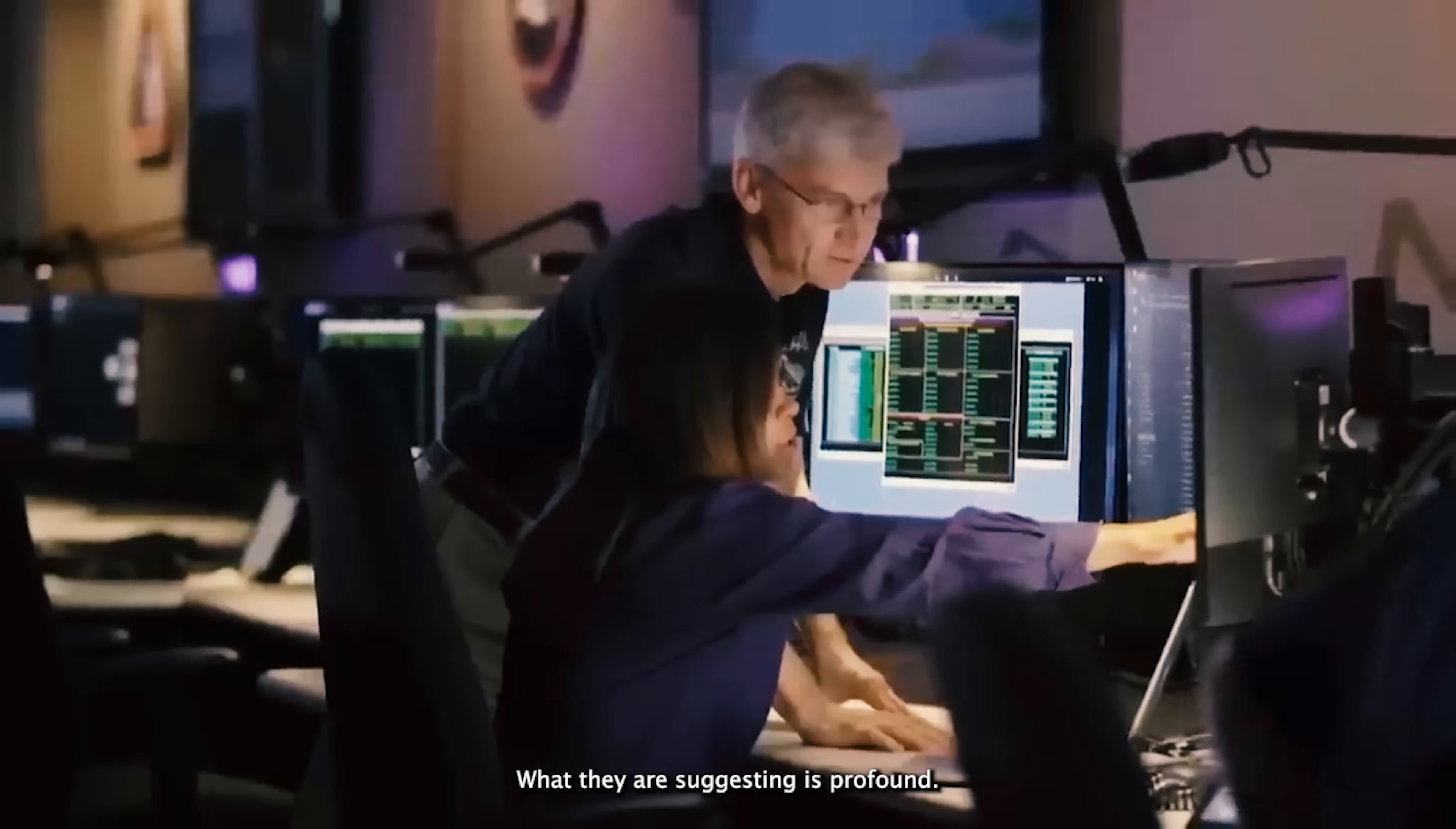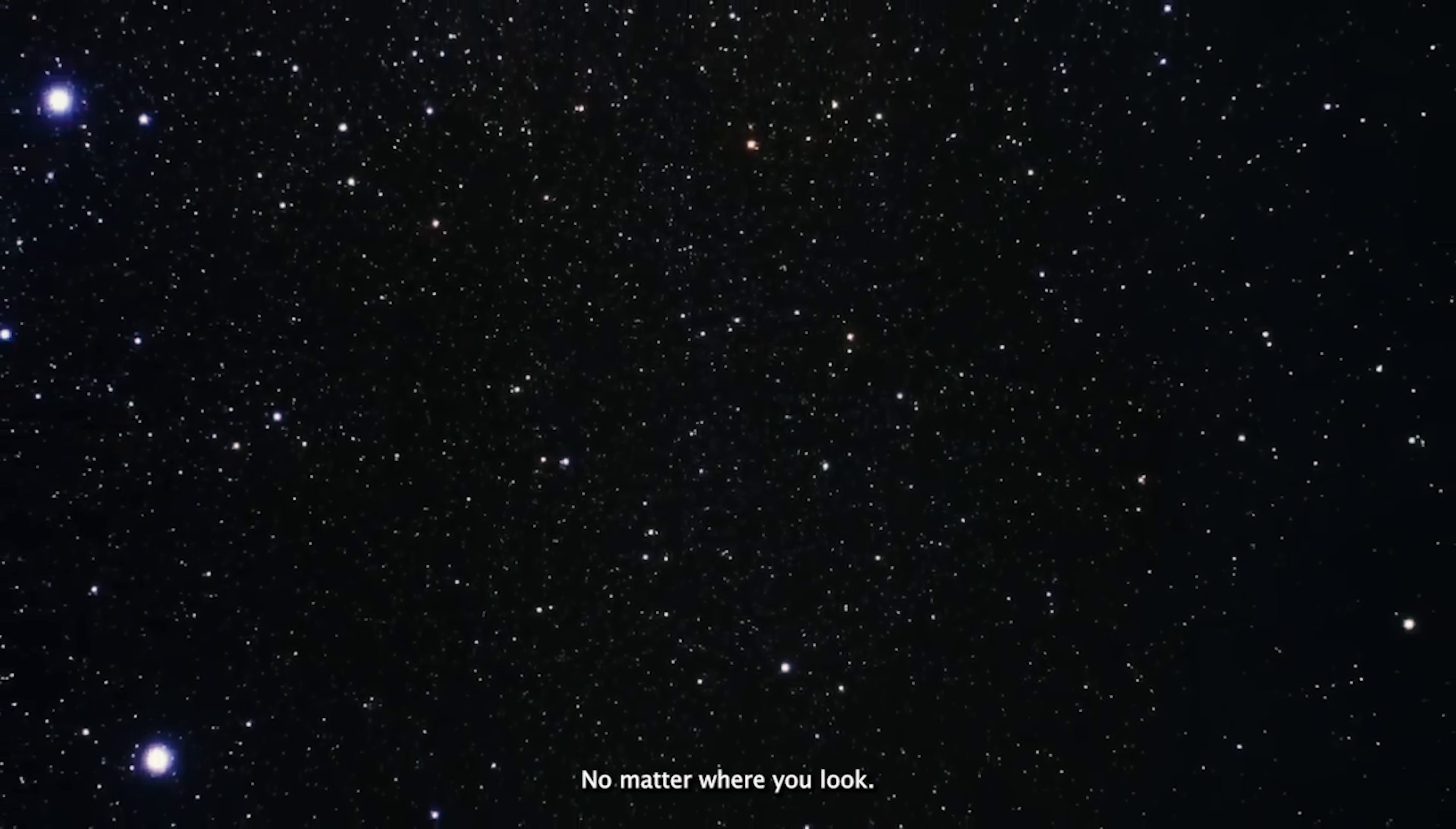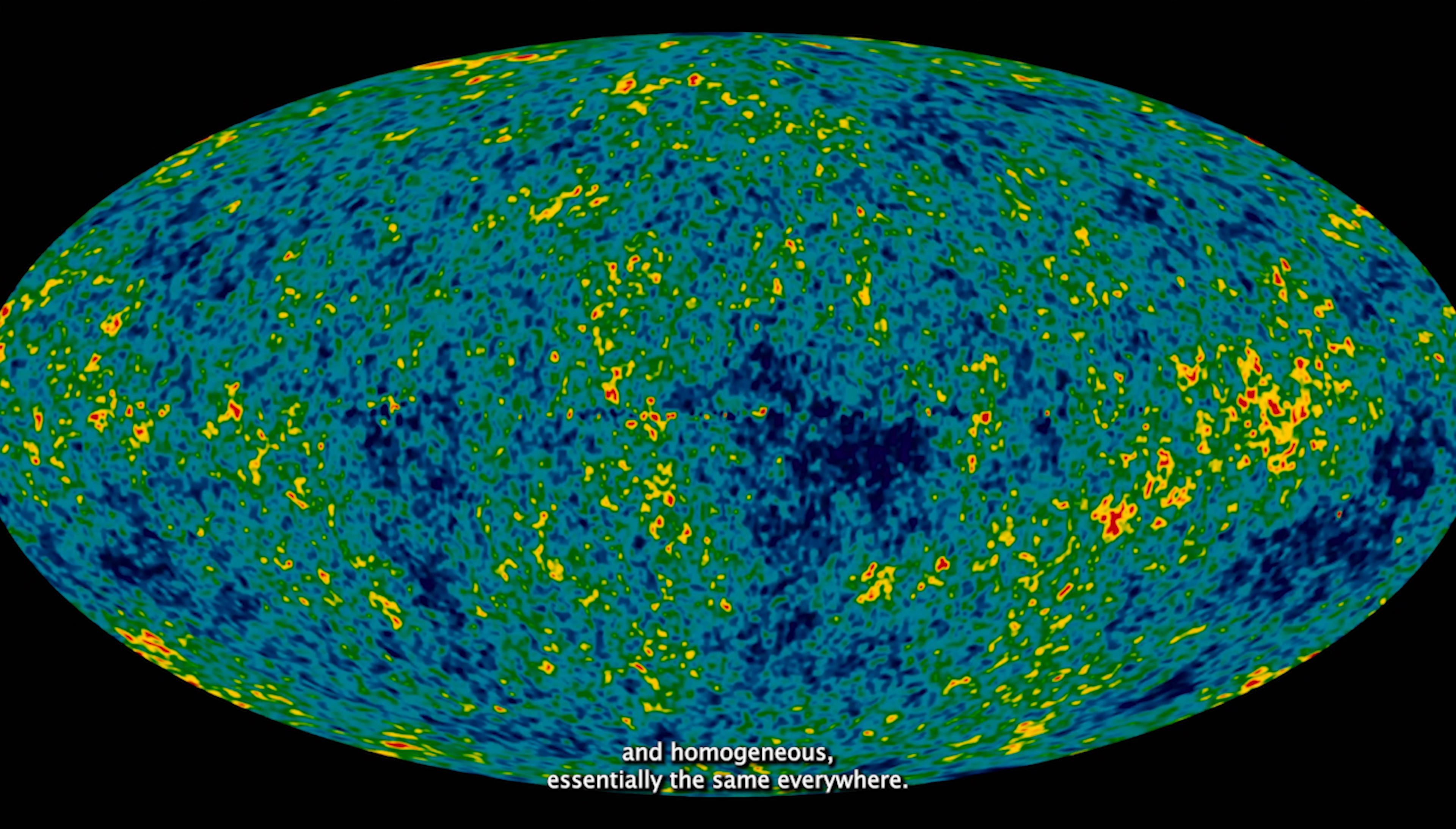What they're suggesting is profound. If we were to zoom out far enough beyond planets, stars, and galaxies, the universe would appear as a vast, uniform expanse. Matter would seem evenly distributed no matter where you look. This concept, known as the cosmological principle, is a cornerstone of the standard cosmological model. It assumes the universe is isotropic and homogeneous, essentially the same everywhere.